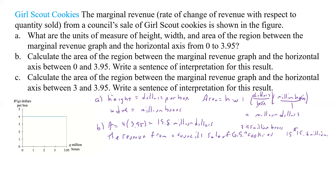All right, what about the next one? Calculate the area of the region between the marginal revenue graph and the horizontal axis between 3 and 3.95. So now we're just looking at that specific region. The area is going to equal 4 times (3.95 minus 3), and if we plug that into our calculator, we get 3.8 million dollars.